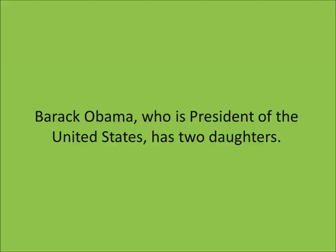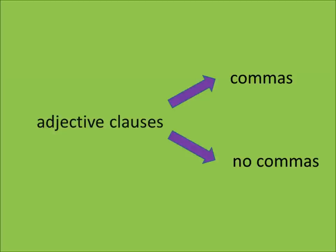Using commas in adjective clauses. When you're reading, sometimes you will see a sentence like this: Barack Obama, who is President of the United States, has two daughters. And you might ask yourself, why are those commas there? The good news is that there are some rules that you can think about to help you decide when to use commas in your own writing. That's the subject of this video: using commas in adjective clauses.